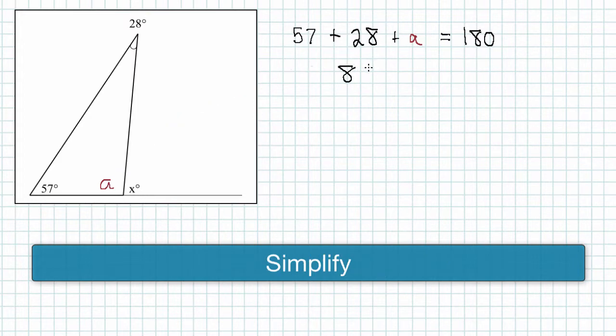We'll continue to simplify. 57 and 28 is 85, still equals 180.